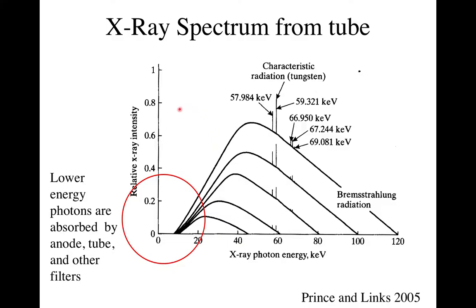Those low-energy photons that are filtered out would never make it through the patient — zero probability of getting out the back. All they would do is deposit energy (dose) in the patient without improving your image. If we turn the dial down to 100 keV peak, we get a different spectrum of X-rays. So you can change the spectrum on your system.